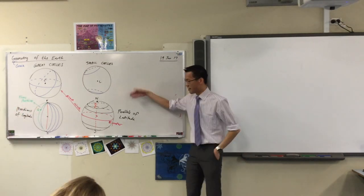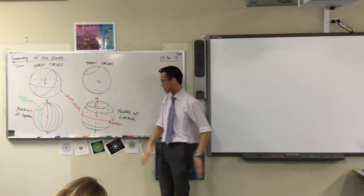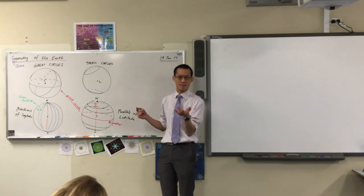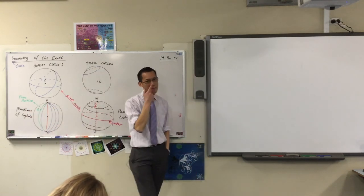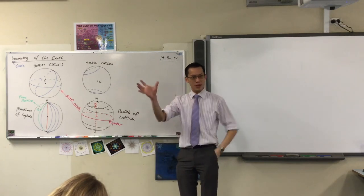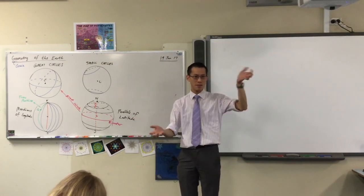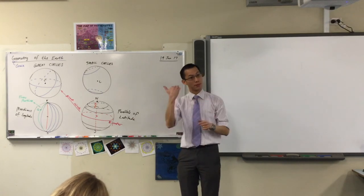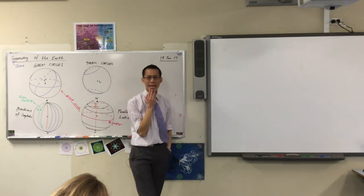I said before, the parallels of latitude, the name makes sense. Latitude, because they're all across. Parallels, because they are parallel. The word meridian, it means midday. Meridian. Which is why AM/PM is post meridian, anti meridian, anti being anti with an E as in before. Why would these things be called meridians? Middays. Anyone know?